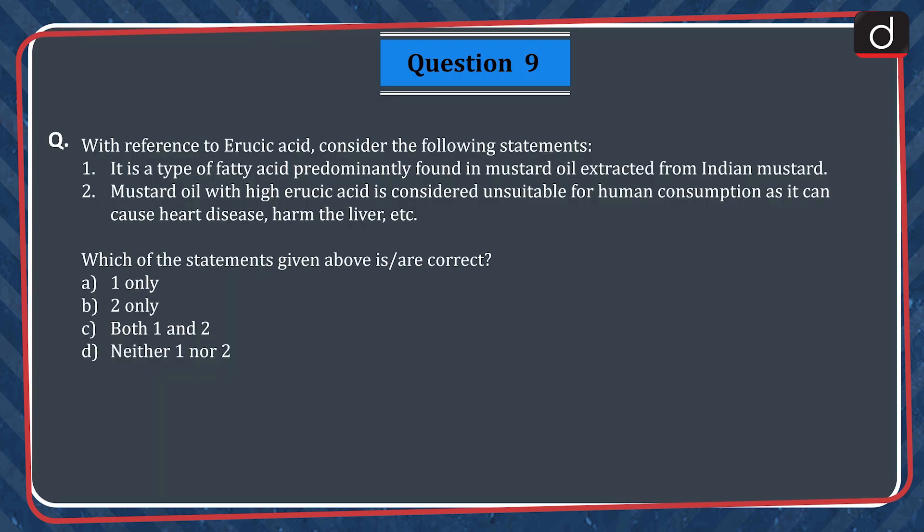Question 9. With reference to erucic acid, consider the following statements. 1. It is a type of fatty acid predominantly found in mustard oil extracted from Indian mustard. 2. Mustard oil with high erucic acid is considered unsuitable for human consumption as it can cause heart disease, harm the liver, etc. Which of the statements given above is or are correct?